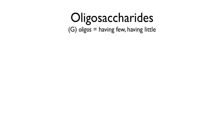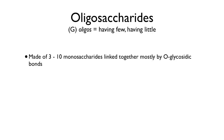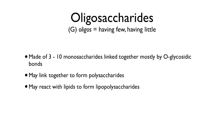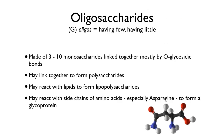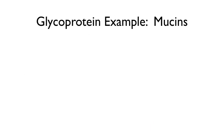Oligosaccharides — that term comes from the Greek meaning few or little — that's about three to ten monosaccharides linked together. If you link individual oligosaccharides together, you can make a polysaccharide; poly means many. Some oligosaccharides react with lipids to make lipopolysaccharides. Some react with side chains of amino acids, especially asparagine, to form a glycoprotein. And glycoproteins turn out to be really important and they're all over the place.